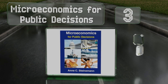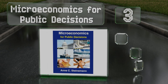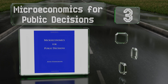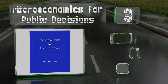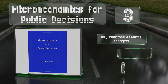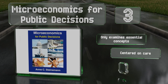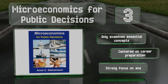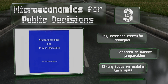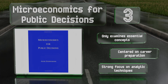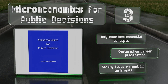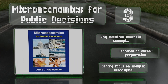Nearing the top of our list at number three, Microeconomics for Public Decisions bridges the gap between theory and practicality, showcasing how often-taught principles translate into societal outcomes without relying too heavily on math or prior economics coursework, making it great for other majors. It only examines essential concepts and is centered on career preparation, with a strong focus on analytic techniques.